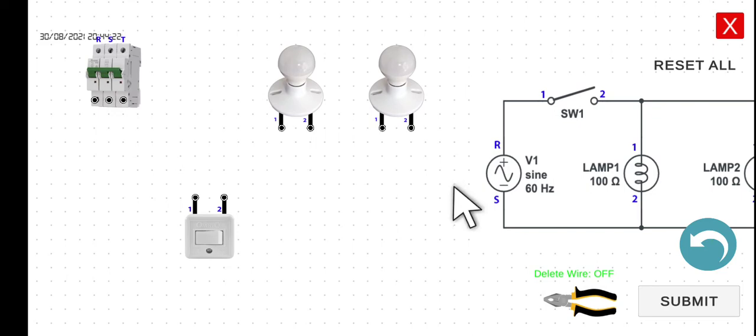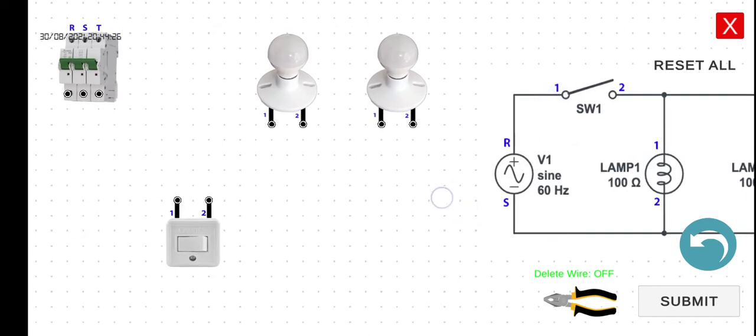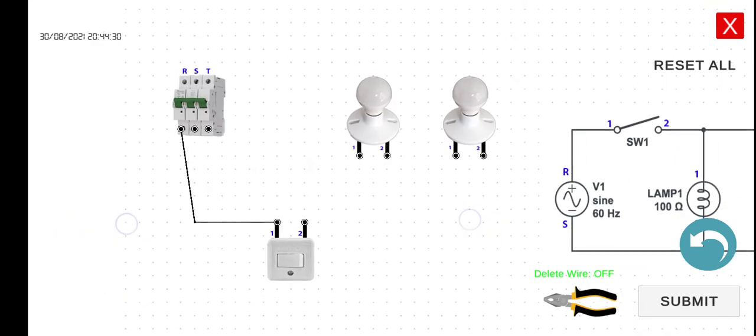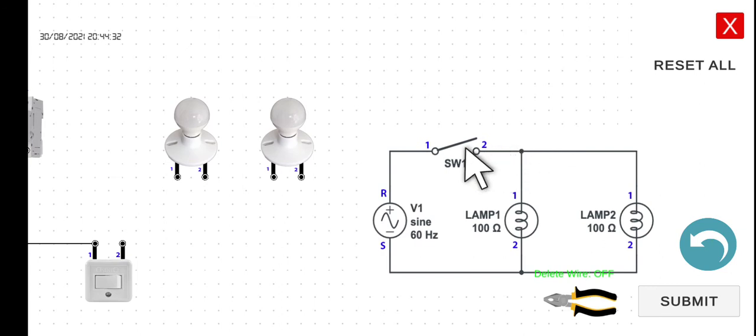So first we have to connect the R to the first terminal of our switch. And next we have to connect the second terminal of our switch to the first terminal of lamp one.